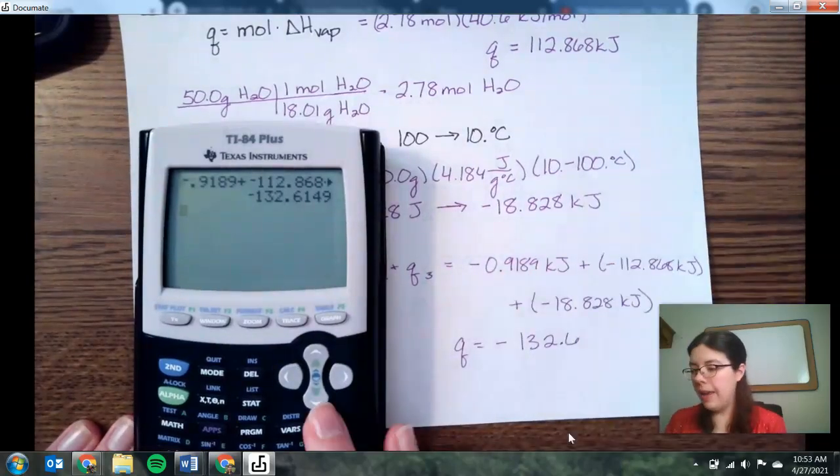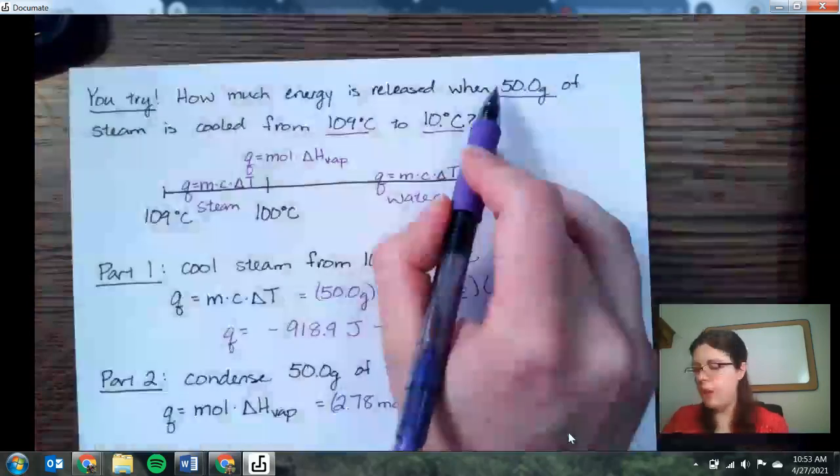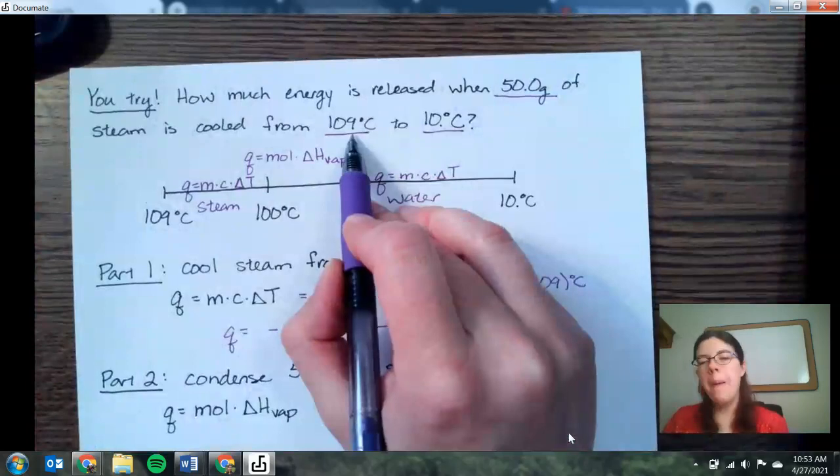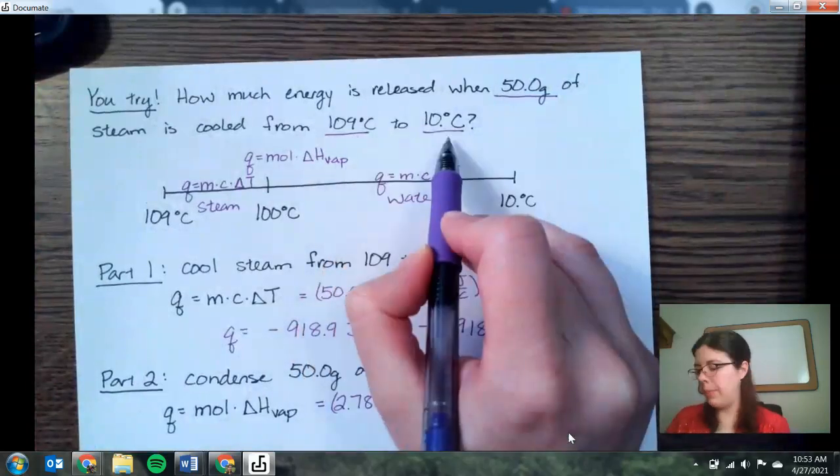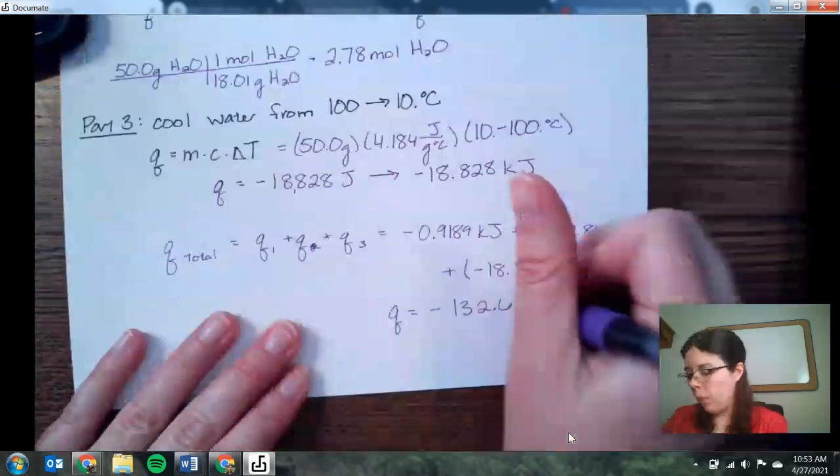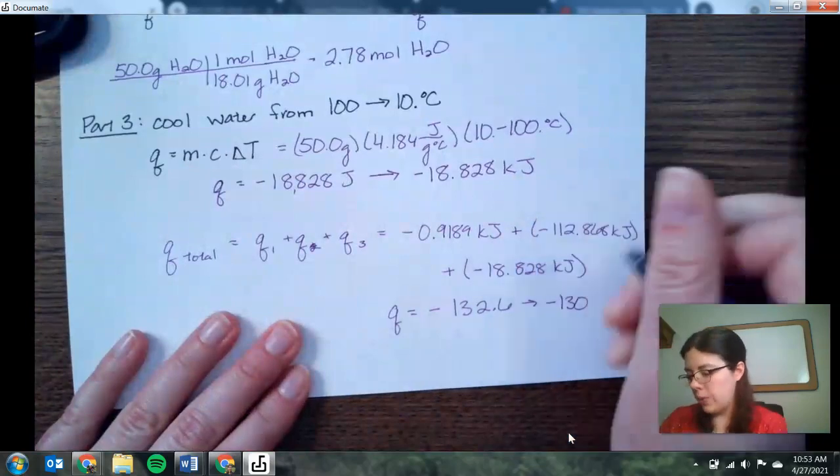Our overall Q is equal to a negative 132.6. But if we think about sig figs, go back to our very beginning. We have three sig figs here from the math, three sig figs from this temperature, but only two sig figs from this temperature. So we go ahead and round this value. We would round it to negative 130 kilojoules.